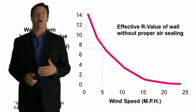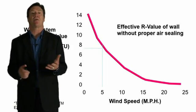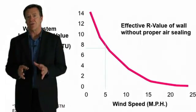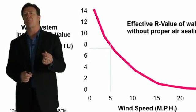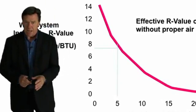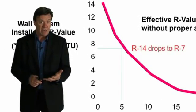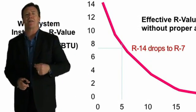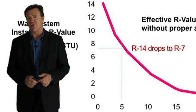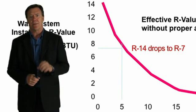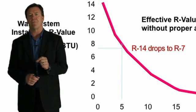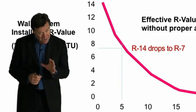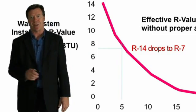For example, with a 5 mile-per-hour wind, unprotected insulation's R-value would drop from R-14 to R-7. So R-14 insulation exposed to even a 5 mph wind almost cuts its efficiency in half. That's why the code addresses air infiltration — not only to stop air from infiltrating through cracks and gaps, but also to protect the effective R-value of the insulation.